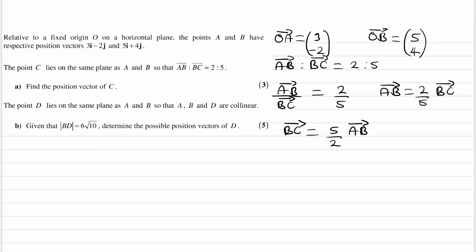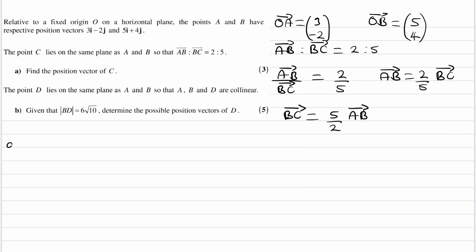So what are we trying to work out? We're trying to work out the position vector of C. The position vector OC we can write as OB plus BC. OB we have, BC is this, so to work out BC we have to work out what AB is.